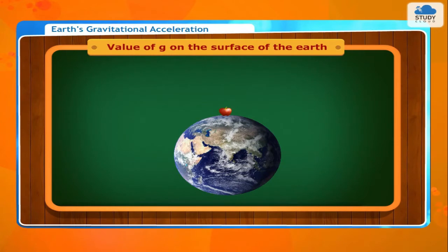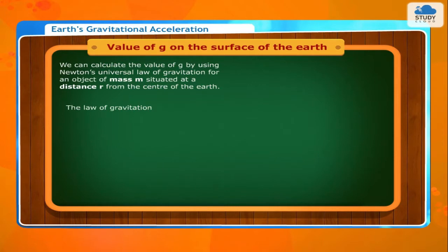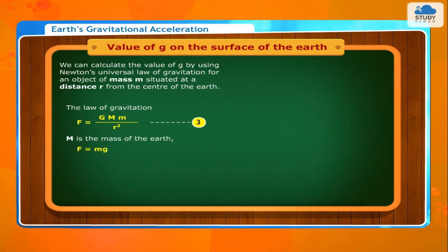Value of g on the surface of the Earth. We can calculate the value of g by using Newton's universal law of gravitation for an object of mass M, situated at a distance R from the center of the Earth. The law of gravitation gives: F = GMM/R². M is the mass of the Earth. From Newton's second law: F = Mg.